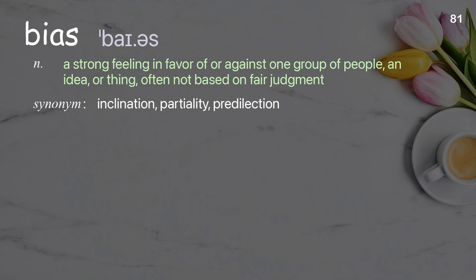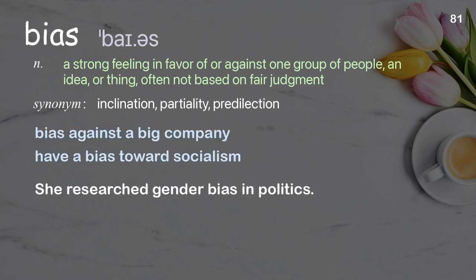Bias: A strong feeling in favor of or against one group of people, an idea, or thing, often not based on fair judgment. Examples: Bias against a big company, have a bias towards socialism. She researched gender bias in politics.